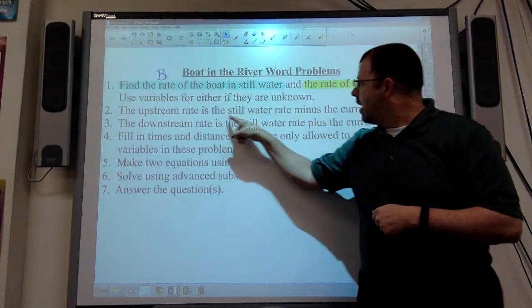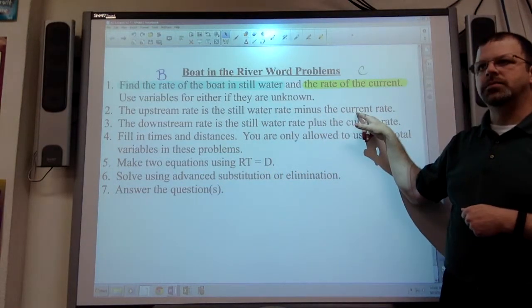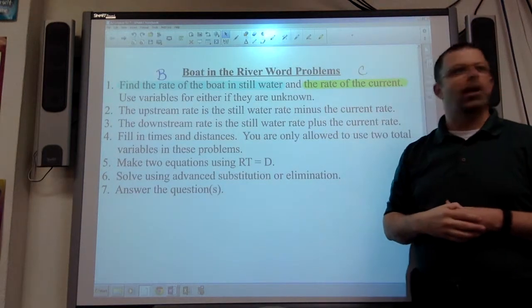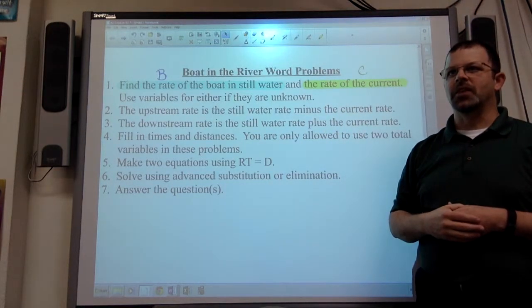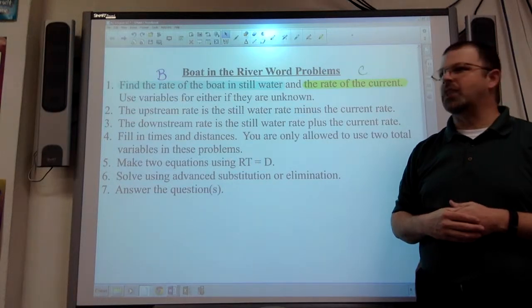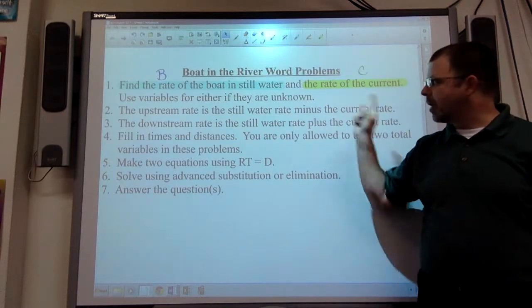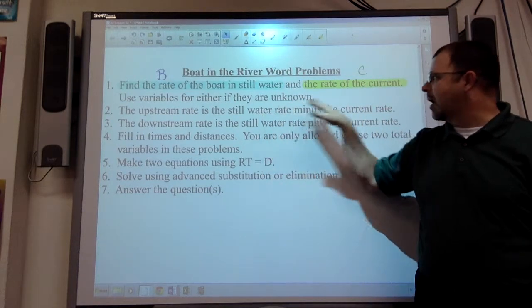It's going to be still water minus current. If the current goes faster than your boat can go, you can't go up the river. If your boat can go 5 miles an hour and the current is 10 miles an hour, you're not going up that river. Typically, B is bigger than C. But it's always the B minus the C.